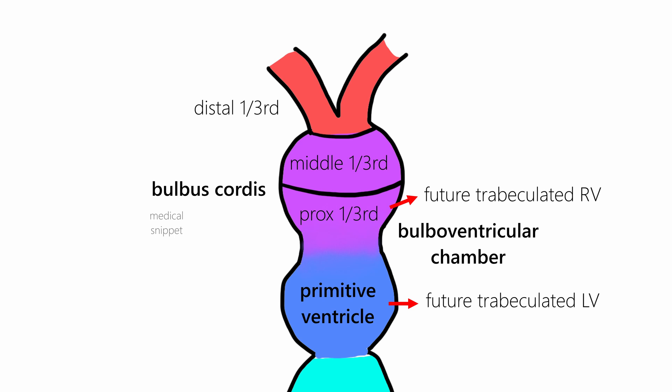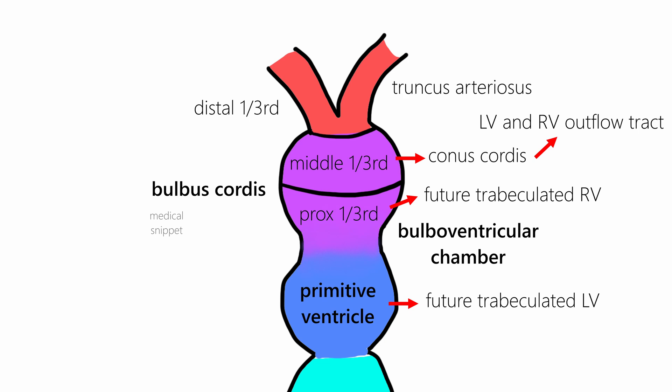The middle third of bulbus cordis is called conus cordis, and it forms the smooth outflow parts of both the ventricles. The distal one-third of bulbus cordis is called truncus arteriosus.